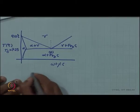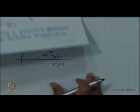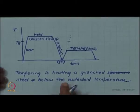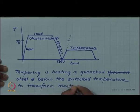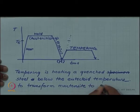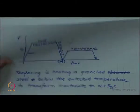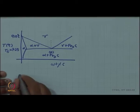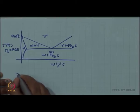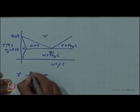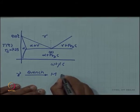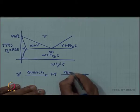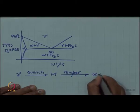In tempering, the result of the tempering is martensite transforms to alpha plus Fe3C. Let us say that we have austenite and we quenched it. We formed martensite and now we are tempering it to produce alpha plus Fe3C.